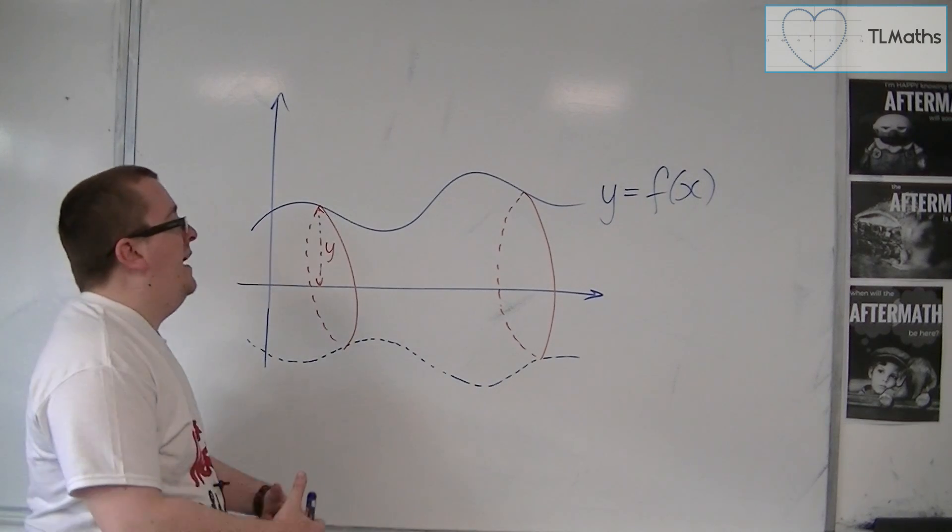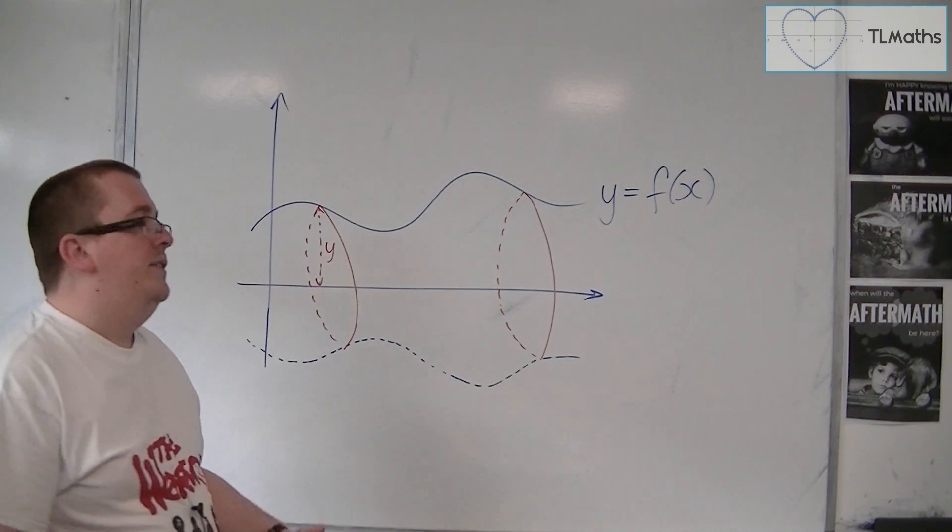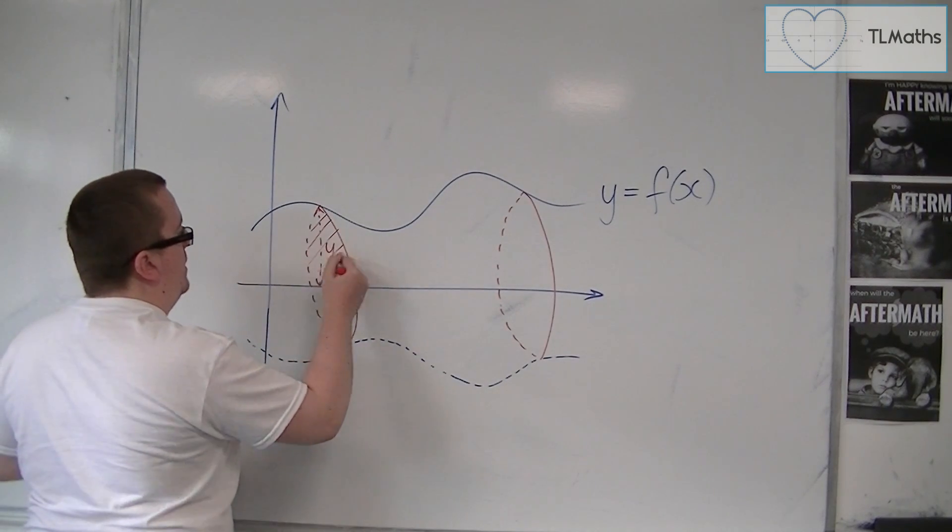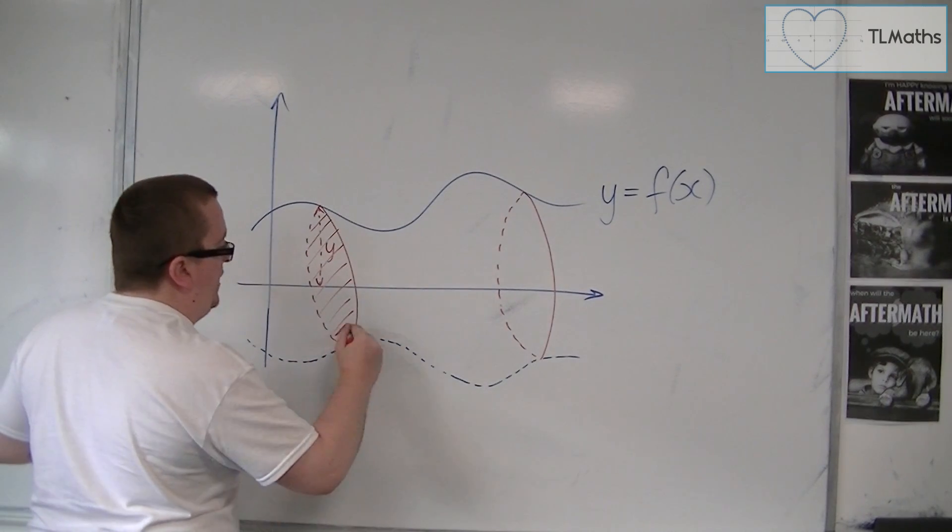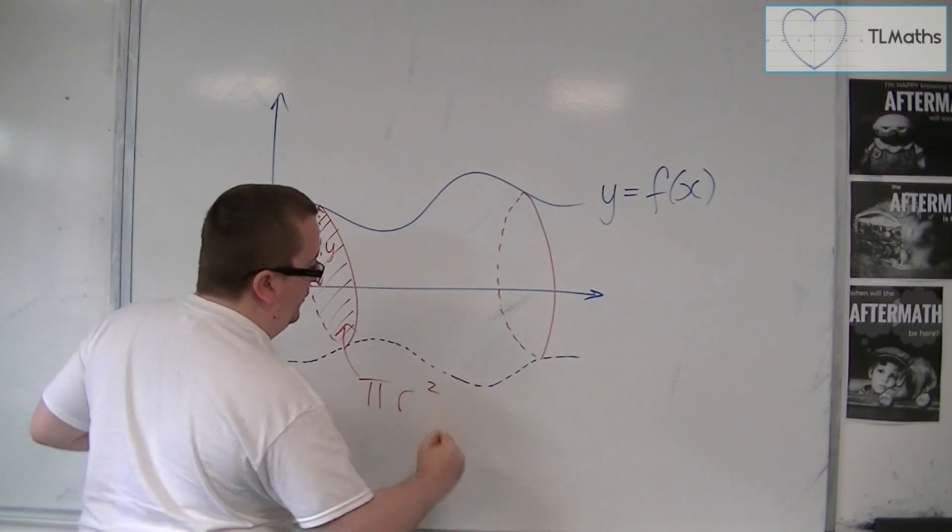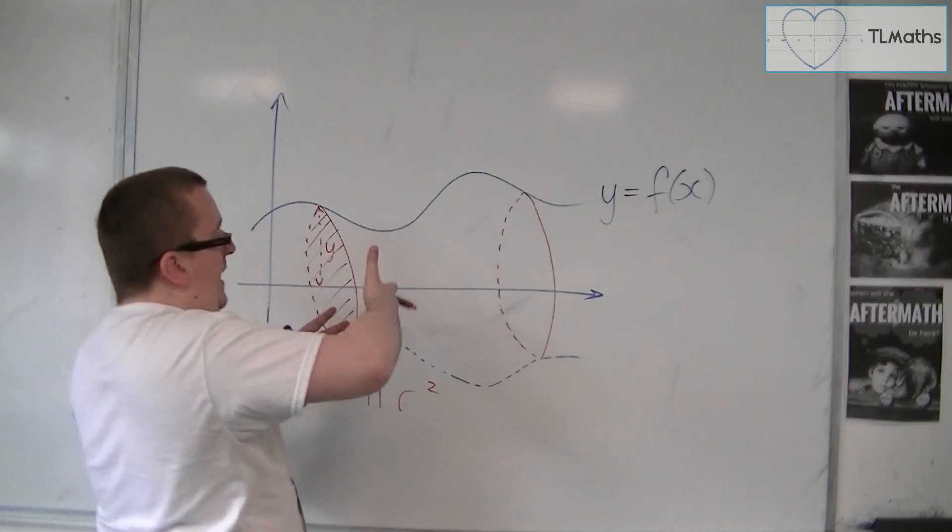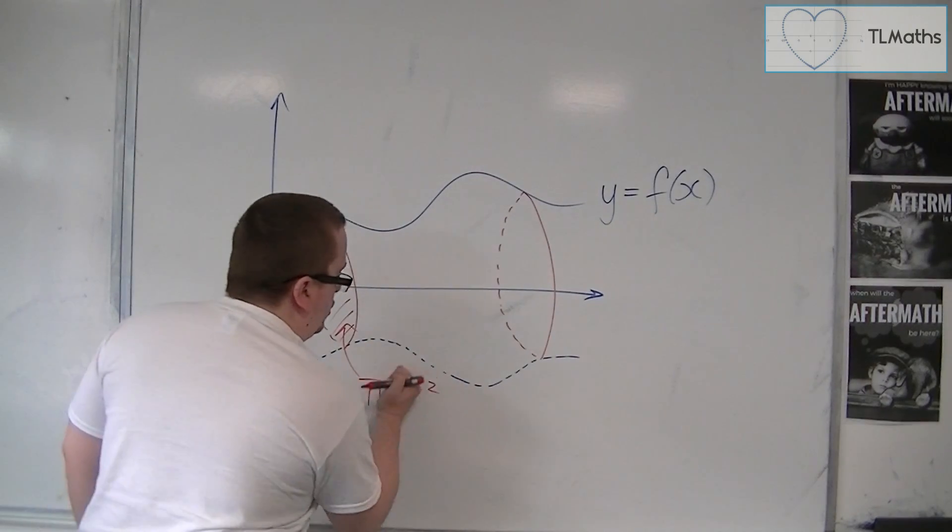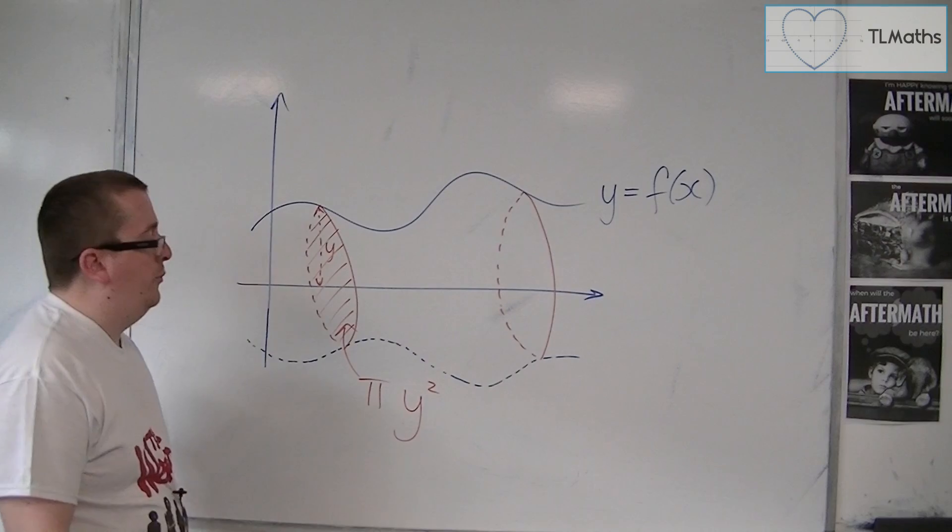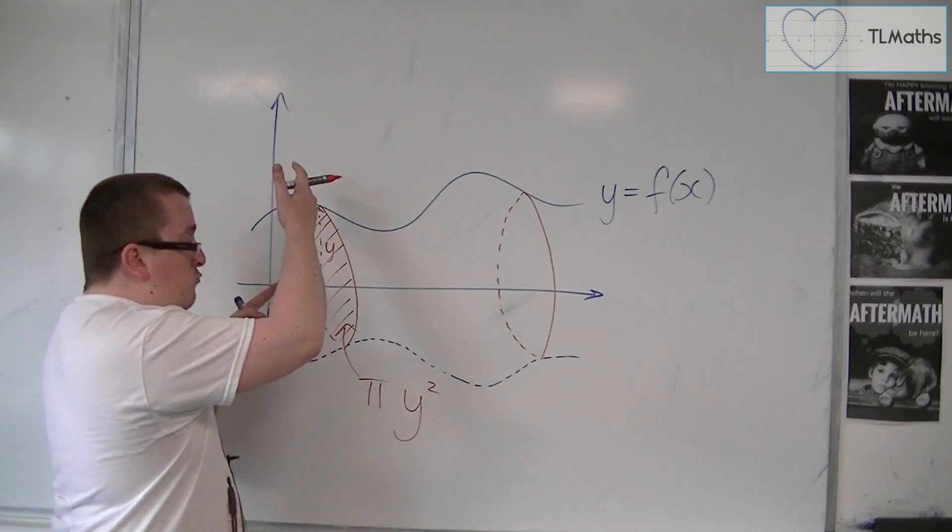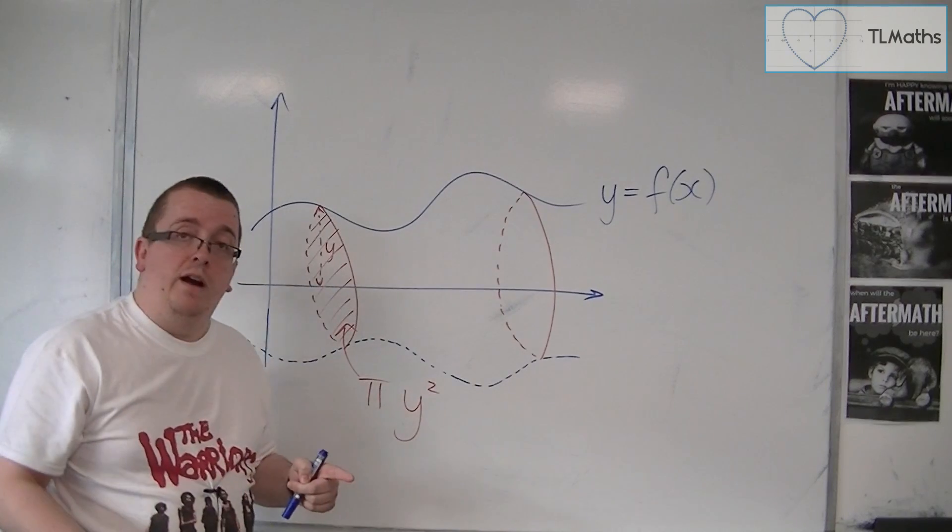We know that for a circle, the area of a circle is given by pi r squared. But if we're looking at each area, then actually the r is y, because the radius depends on where we are.